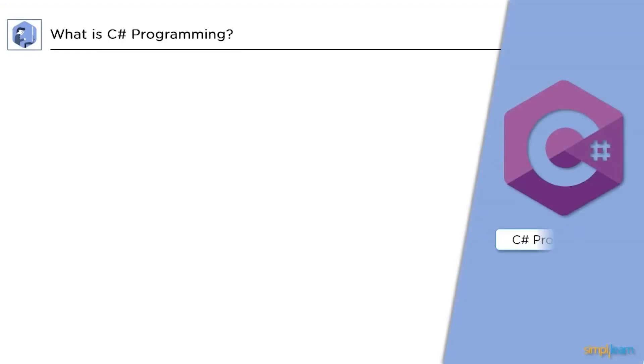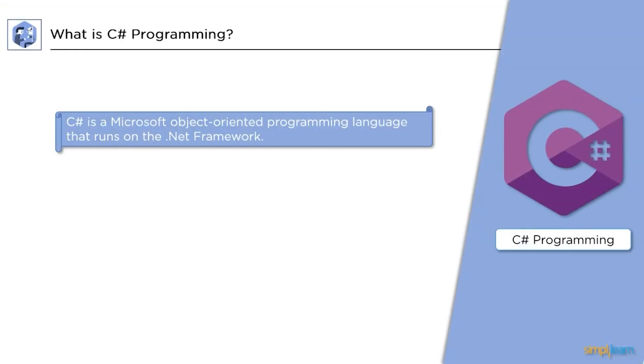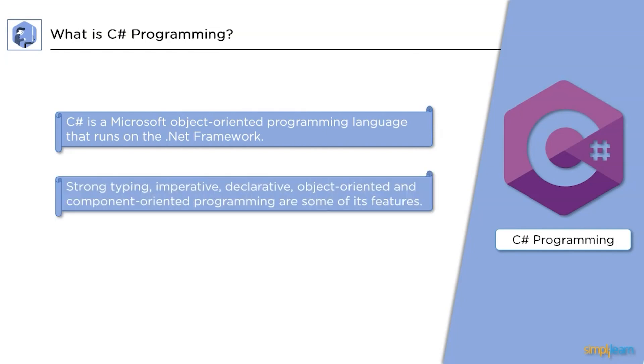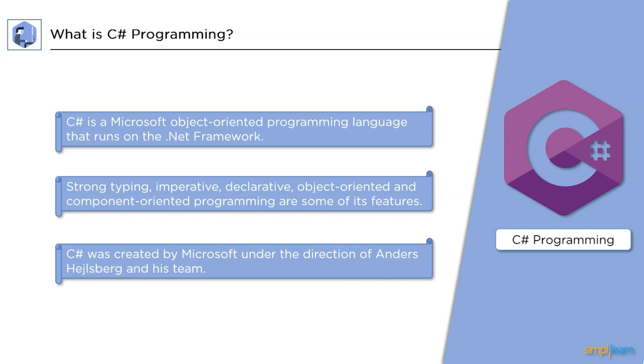C-Sharp is an object-oriented programming language developed by Microsoft that runs on the .NET framework. Its features include strong typing, imperative, declarative, object-oriented, and component-oriented programming. C Sharp was created by Microsoft under the direction of Anders Hejlsberg and his team.